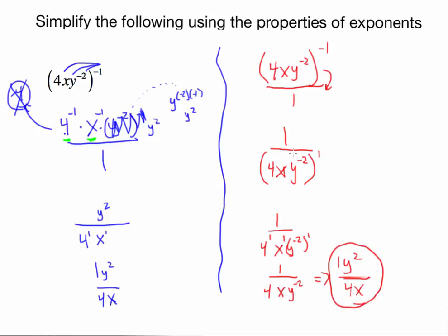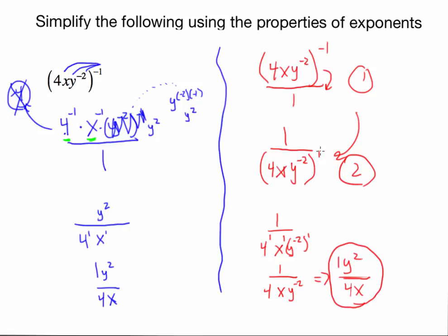A common question is: how come when you moved this expression down to the denominator, why didn't y to the negative 2 become positive? What we were doing when we moved the entire expression to the denominator was changing the exponent on this entire quantity — we were only doing one thing at a time. All I was doing was eliminating this outer negative 1 exponent and making it positive. Therefore nothing else should change. If I want to change or simplify y to the negative 2, I can do that in a future step — we don't want to try to do multiple things at once.